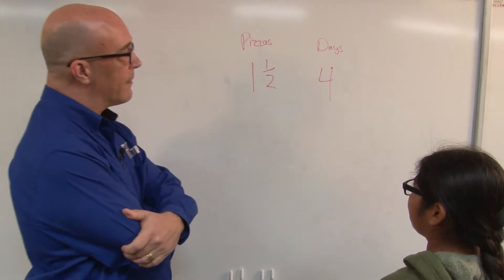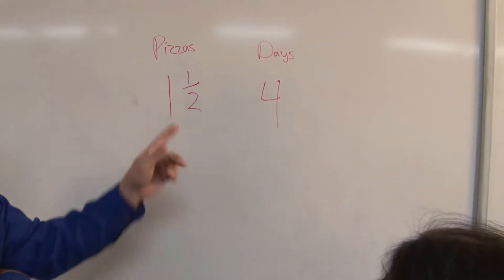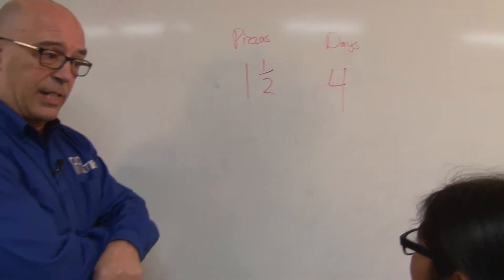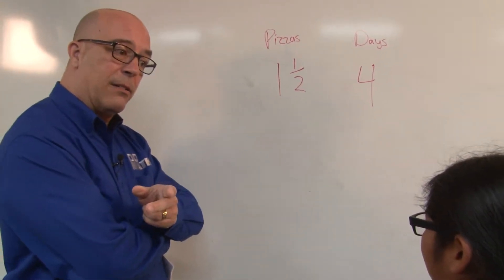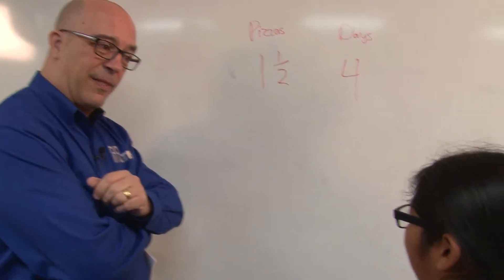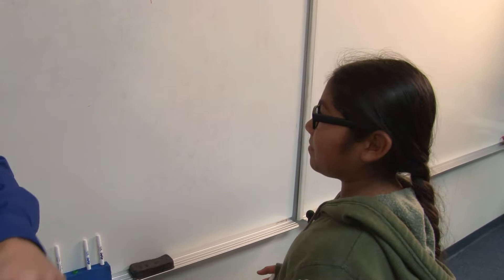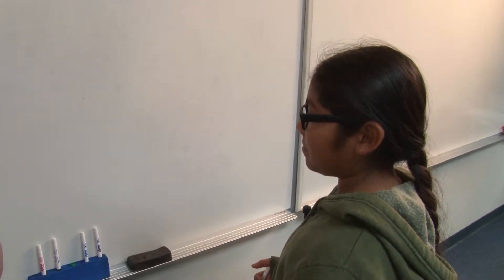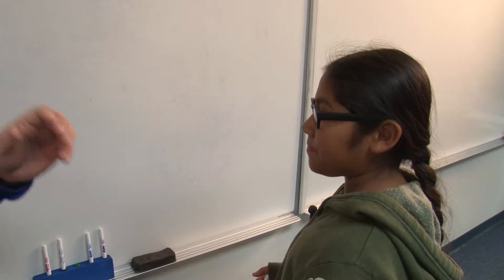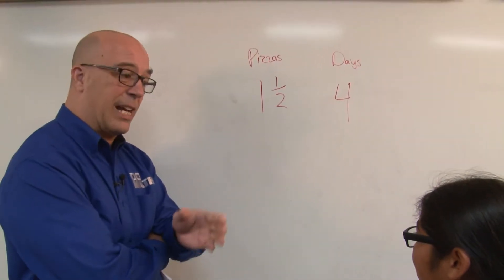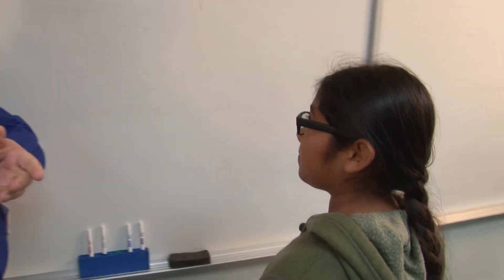By subtracting. Well, we could subtract, right? But if you eat 1½ pizzas today and you eat 1½ pizzas tomorrow, how are we going to know how many you ate all together? By adding. By adding them, right? And if you ate 1½ pizzas the next day, what do we need to do to that? Add. Keep adding it, right? If I say you're going to eat 1½ pizzas for the next 180 days, are we going to add 1½ 180 times? Yes. Is there an easier way to do it? By multiplying.